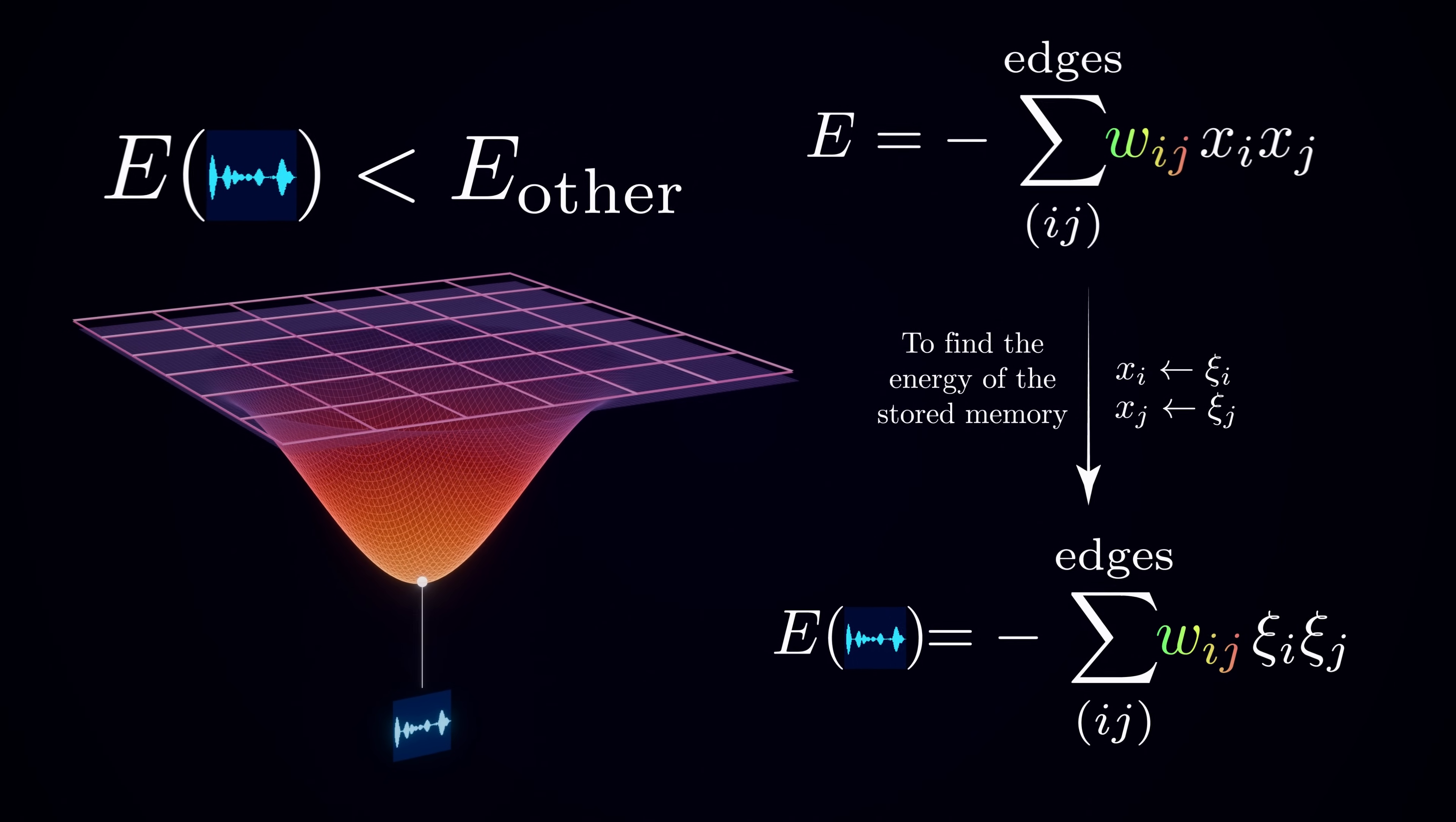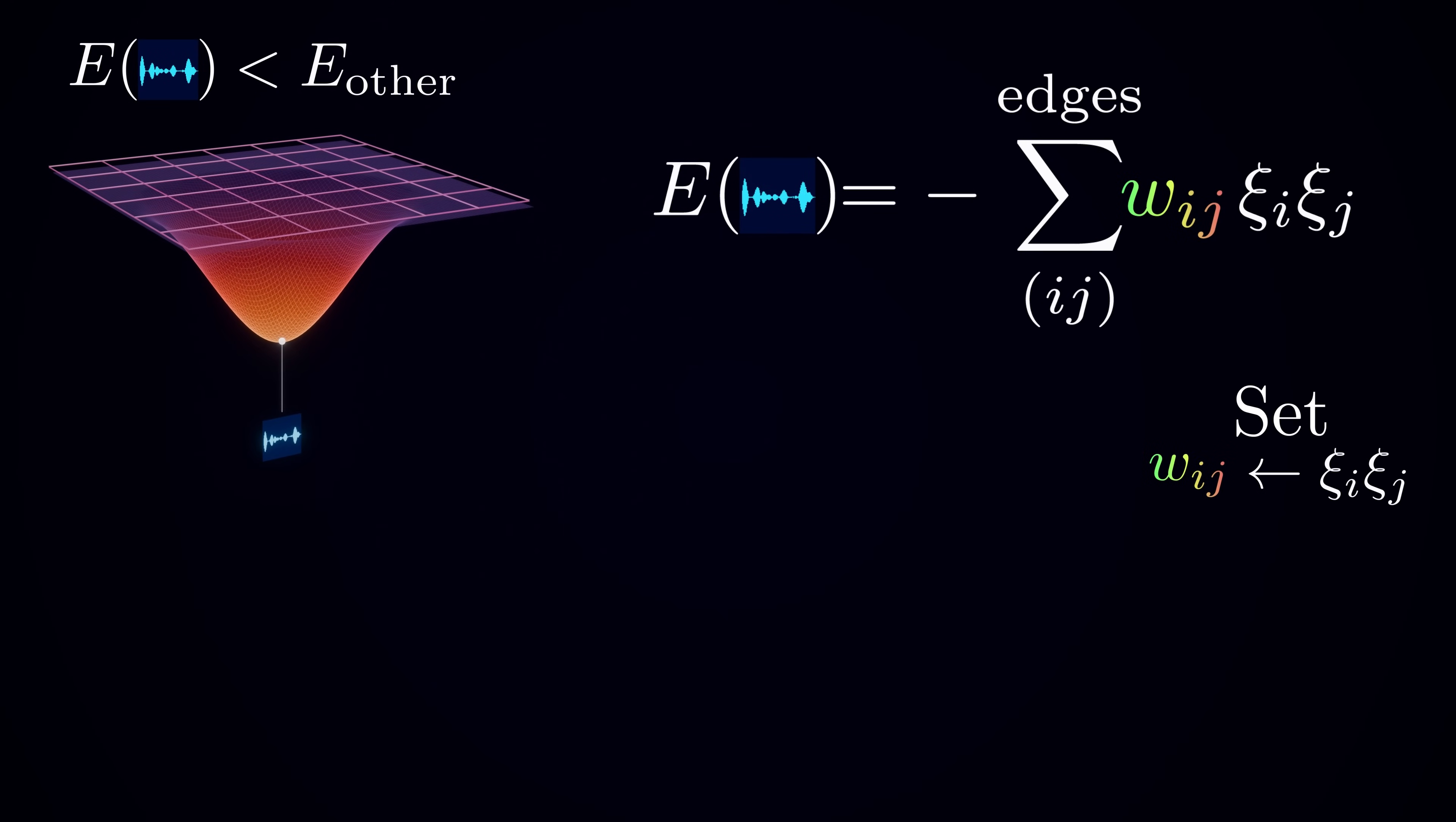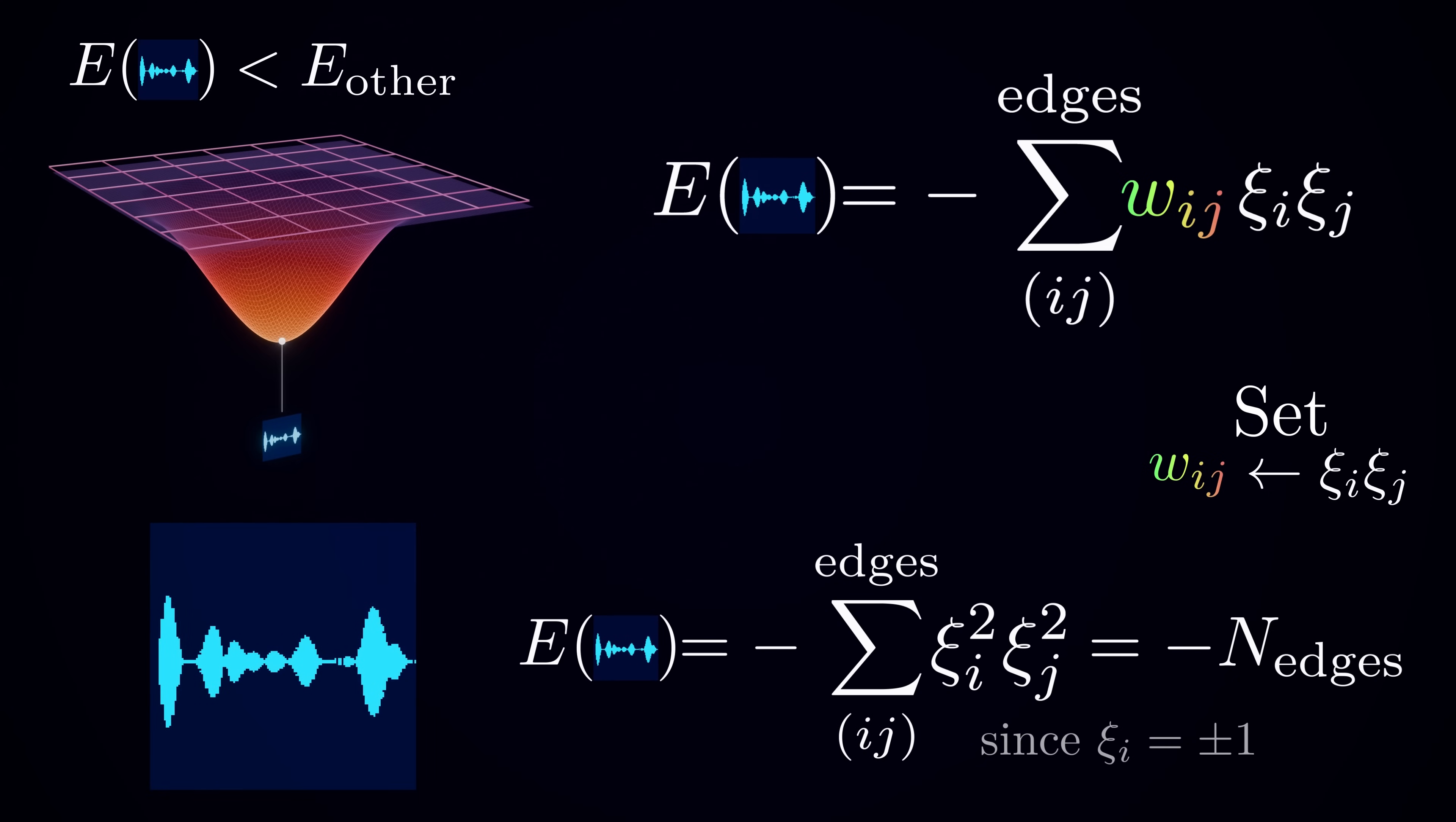Notice that we don't really care about the absolute value of that energy, as long as the energy of the desired memory pattern is less than the energy of any other configuration. Now intuitively, the lowest possible energy is obtained when all the connection weights fully align with the state pairs. But when we have just a single pattern, this is very easy to do. All we need is to set the weight wij to be the product of the corresponding pair of states in the memory pattern. This way, every connection is satisfied, and the energy of the network, when it is in the state Xi, becomes the negative of the total number of edges. When the network is in the state Xi, any single flip of a neuron would increase the energy, thus making it a stable state.